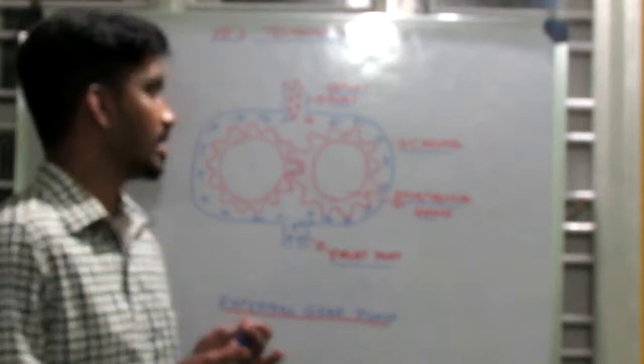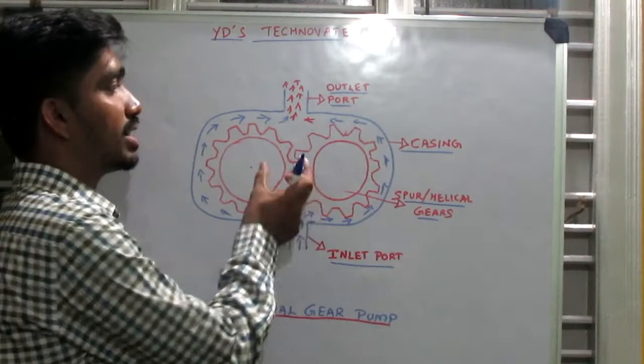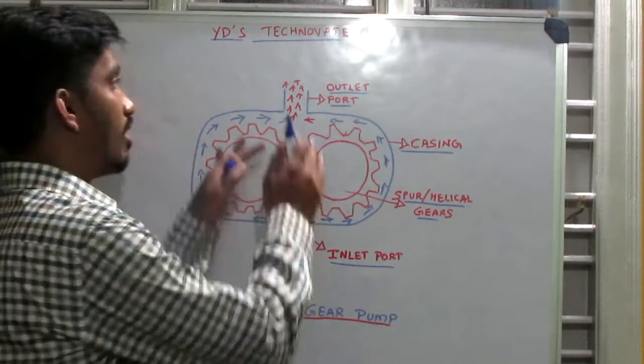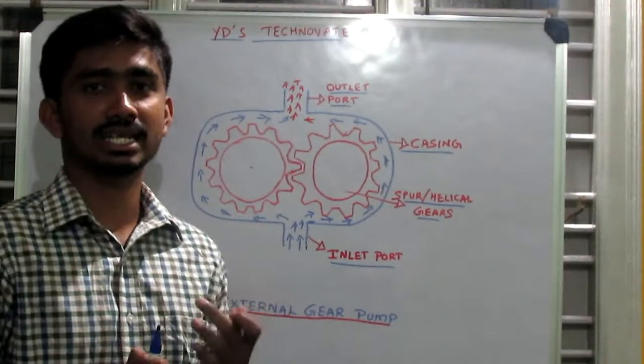This is the construction of the external gear pump. In simple, there will be an inlet port, an outlet port, and a gear which might be a spur gear or a helical gear. All these parts are placed inside the casing.